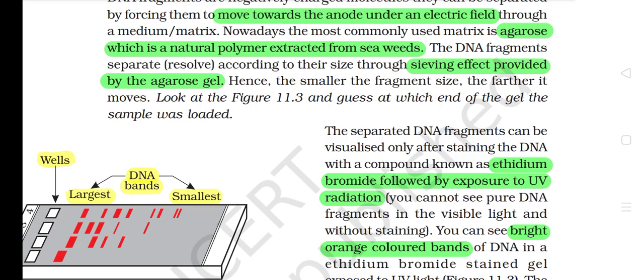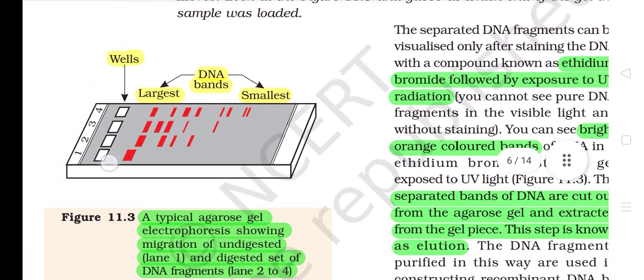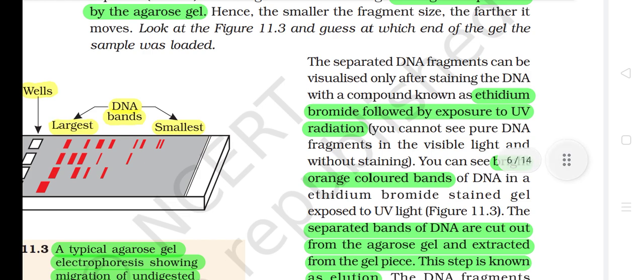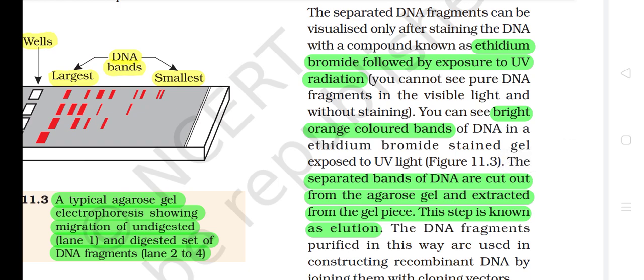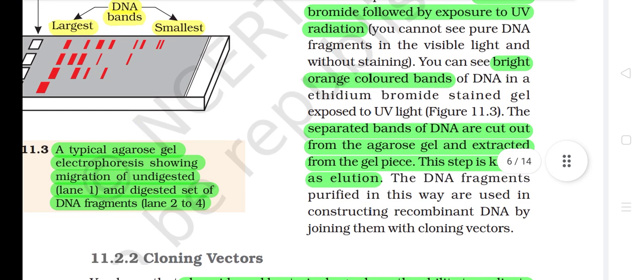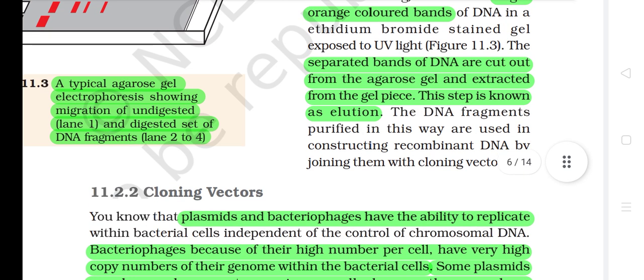Look at Figure 11.3 and guess at which end of the gel the sample was loaded. The separated DNA fragments can be visualized only after staining the DNA with a compound known as ethidium bromide, followed by exposure to UV radiation. You cannot see pure DNA fragments in visible light and without staining. You can see bright orange colored bands of DNA in ethidium bromide stained gel exposed to UV light. The separated bands of DNA are cut out from the agarose gel and extracted from the gel piece. This step is known as elution. The DNA fragments purified in this way are used in constructing recombinant DNA by joining them with cloning vectors.